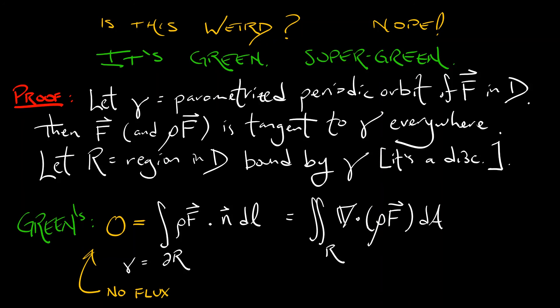So this loop integral on the left is zero. That means the double integral on the right is zero. And if we're integrating a function over a disk and it integrates to zero, that means, since it's continuous,